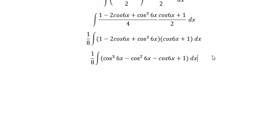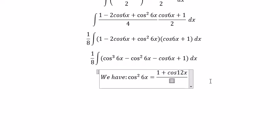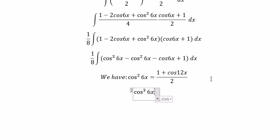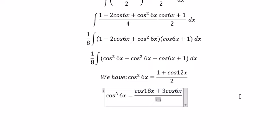So we have the formula in here. We have cos²6x equals to (1 + cos12x)/2. And this one, we got about (cos18x + 3cos6x)/4.